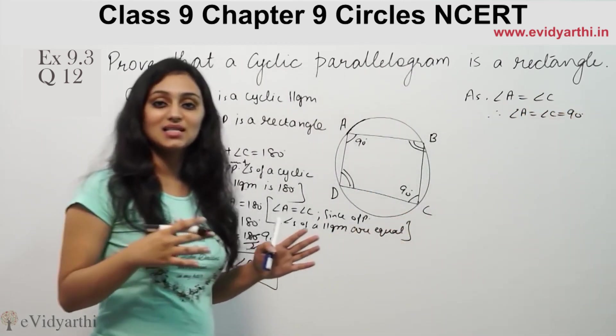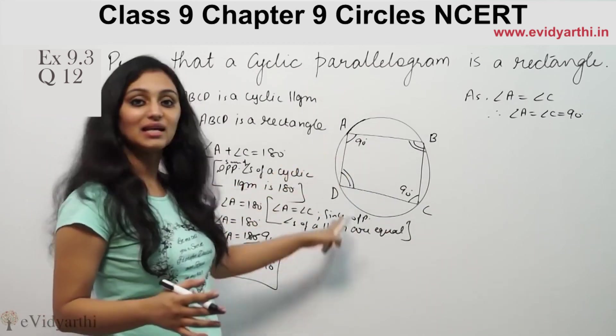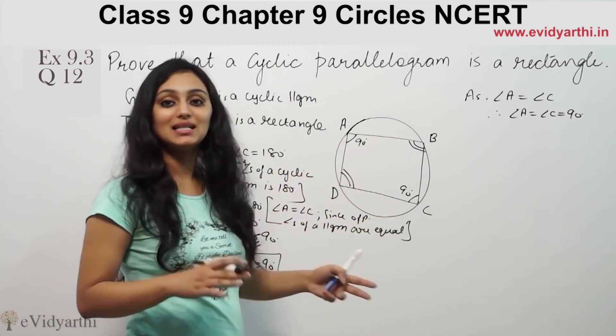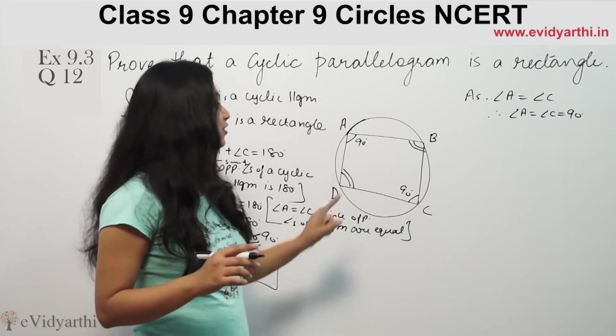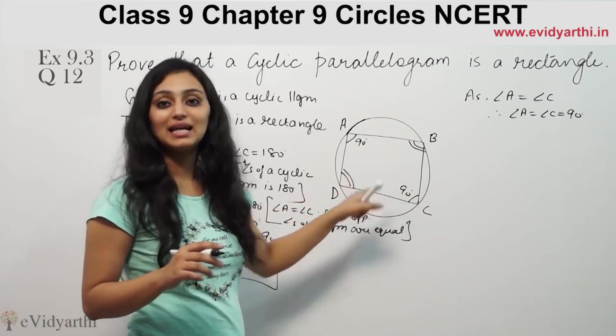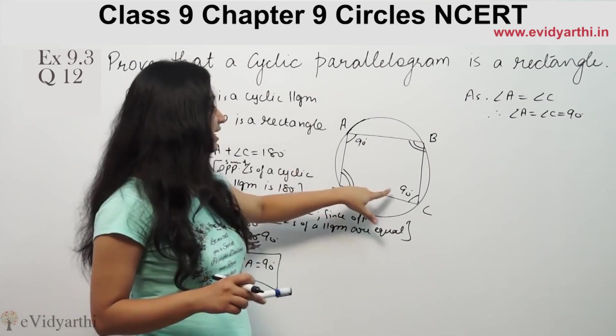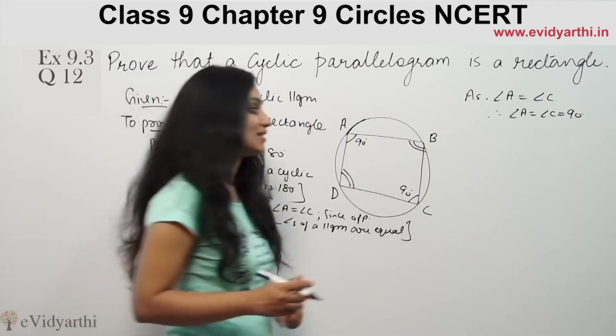Since opposite angles are 90, similarly all are 90. Opposite sides of parallelogram are equal and rectangle are equal. Only difference is that rectangle has all angles 90, not in parallelogram. So we have to prove that it is 90 degrees, that means it is a rectangle.